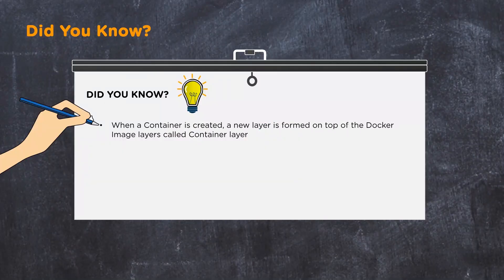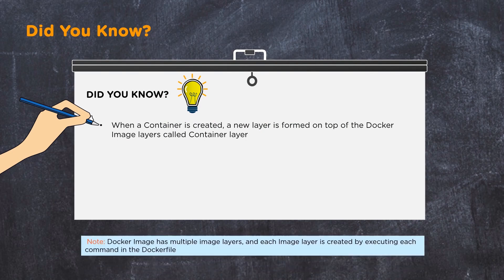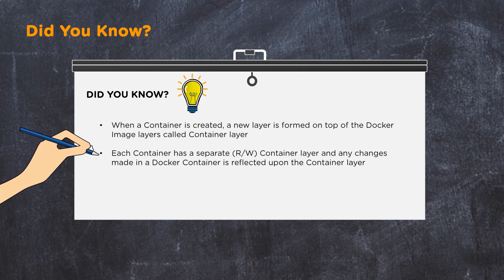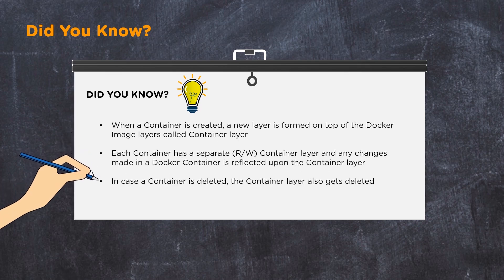When a container is created, a new layer called the container layer is formed on top of the Docker image layers. This layer consists of the application and its dependencies. Each container has a separate read/write container layer, and any modifications done in a Docker container are reflected upon the container layer. If a container is deleted, the container layer is also permanently deleted.